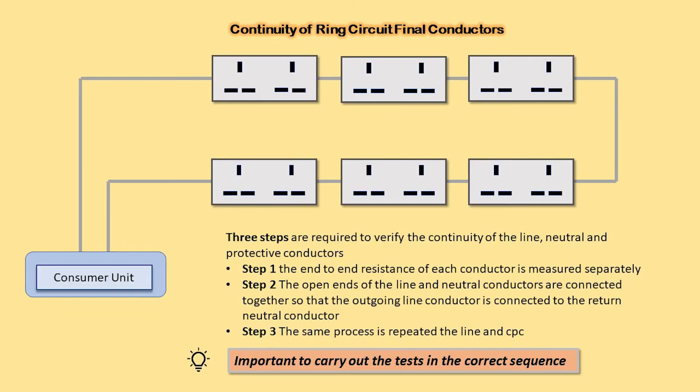There are three steps when we check the continuity of conductors, and it is important that they are carried out in the correct sequence. Step one is the end-to-end resistance of each conductor, measured separately. Step two, the open ends of the line and neutral conductors are connected together so that the outgoing line conductor is connected to the return neutral conductor. Step three, the same process is repeated for the line and CPC.